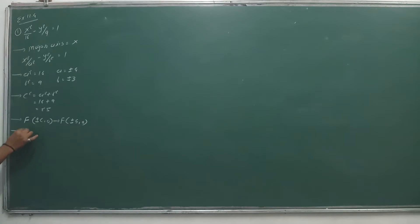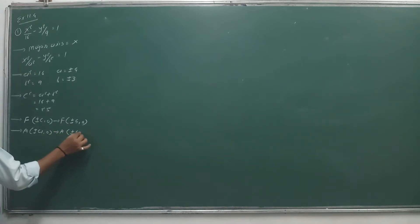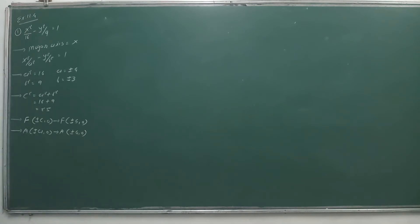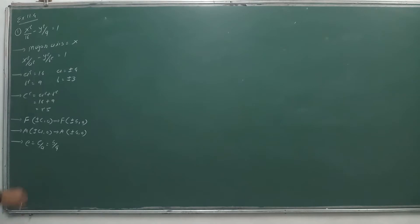Then for vertices, it is (±a, 0). So vertices = (±4, 0), since a = 4. Foci ready, vertices ready. Then eccentricity e = c/a, so c = 5 and a = 4, giving e = 5/4.